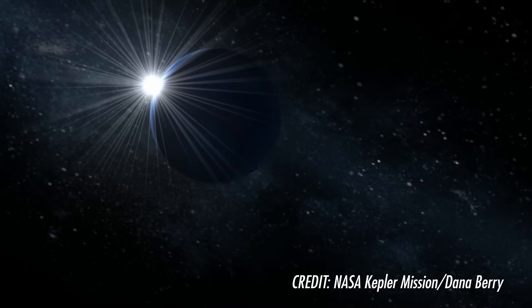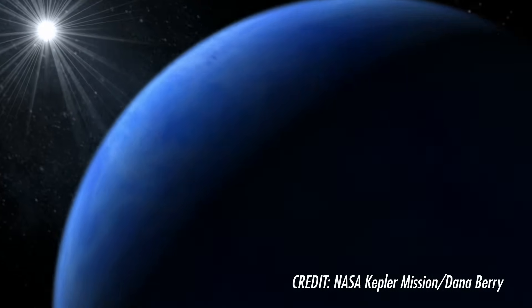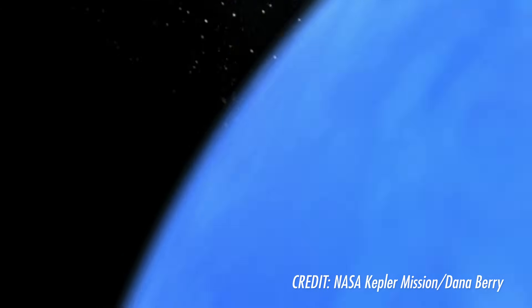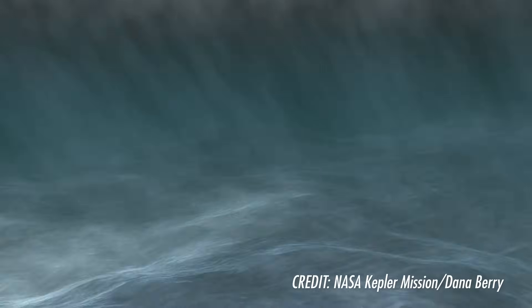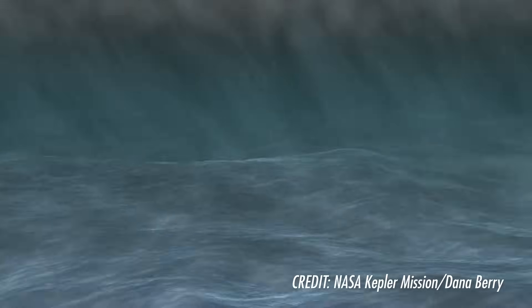But Earth-sized is one thing. Earth-like is another. How many of these planets might actually be habitable, that is, at the right distance from their star, to have Earth-like conditions where liquid water could exist on their surface? We're not sure. But from what we've seen so far, it looks like the galaxy may have more than 10 billion Earth-like planets. 10 billion. And maybe a lot more than that.